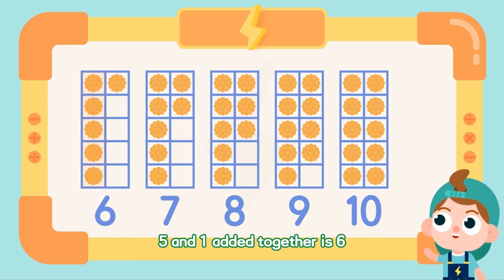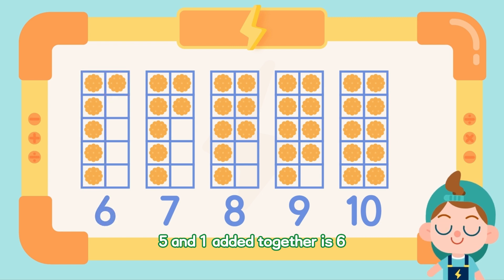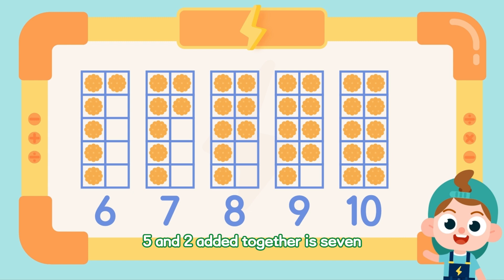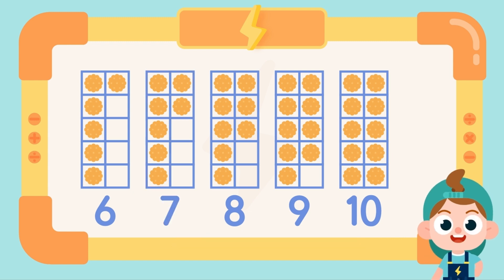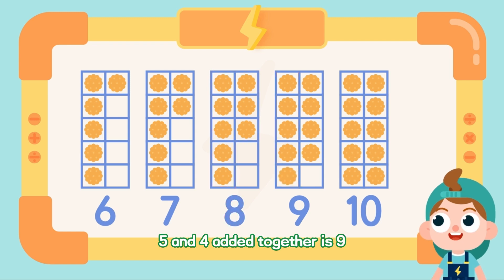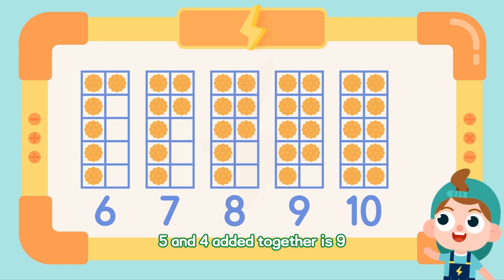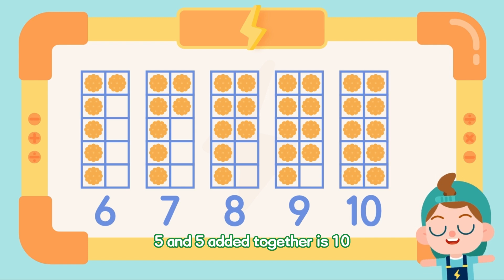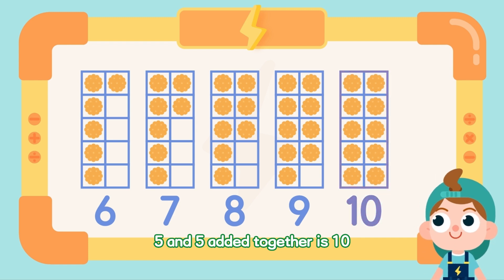5 and 1 added together is 6. 5 and 2 added together is 7. 5 and 3 added together is 8. 5 and 4 added together is 9. 5 and 5 added together is 10.